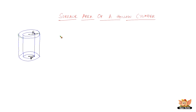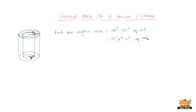Let us work out the surface area of a hollow cylinder. First, let us find each base surface area. We don't need the entire circular base area — just the shaded annular portion. So we take the area of the bigger circular base minus the smaller: π R² − π r² = π(R² − r²) square units. This is the surface area of one base, so for two bases it will be 2π(R² − r²).